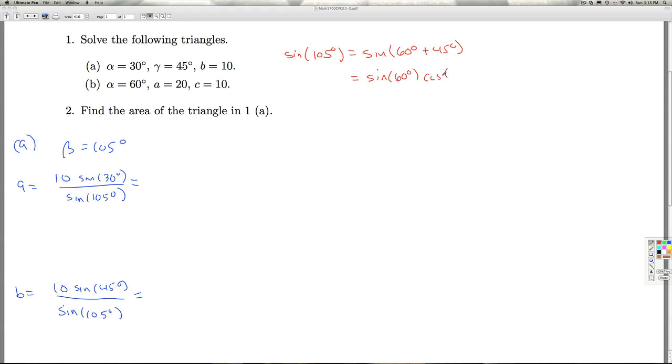So this is sine of 60 degrees, cosine of 45 degrees, plus cosine of 60 degrees, times sine of 45 degrees.